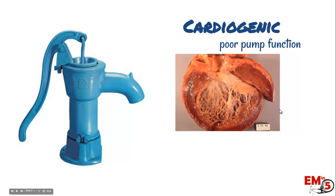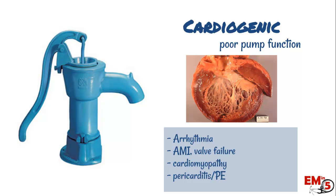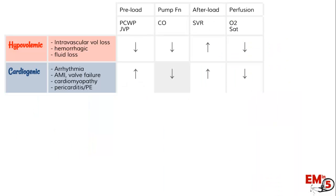The next kind is cardiogenic shock. This means a poor pump function directly from the heart. This can be caused by arrhythmias, a massive MI, valve failure, cardiomyopathy, pericarditis — any of these things that will affect your pump function. Pump function or cardiac output is the main thing affected and is going to be lowered. That means you might have a little bit of backup in your preload, a compensatory increase in your SVR, and generally low perfusion.